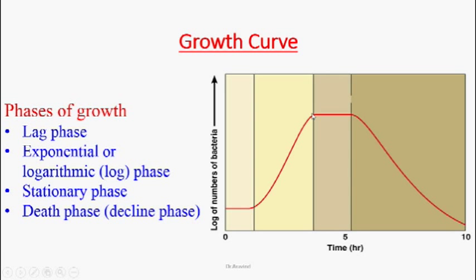After a certain period, bacteria enter the stationary phase. The bacteria grown exponentially have utilized a lot of nutrients and produced large amounts of metabolic waste products. Due to decreased nutrients and increased waste, the number of bacteria replicating equals the number dying, so the growth curve remains flat — stationary.